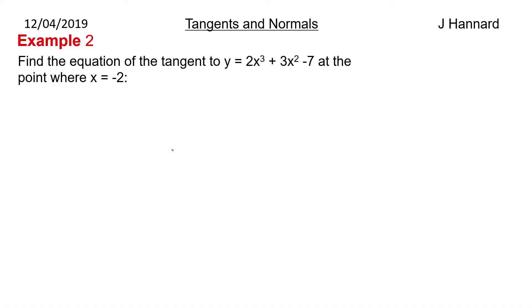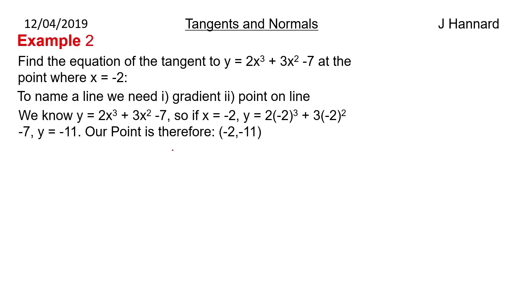Example 2 then. Find the equation of the tangent to y = 2x³ + 3x² - 7 at the point where x = -2. To name a line we need the gradient and the point on a line. We know that y = 2x³ + 3x² - 7. So if x is -2, then we plug -2 into there to get our y coordinate. If you do that, you get -11. So our point is therefore (-2, -11).